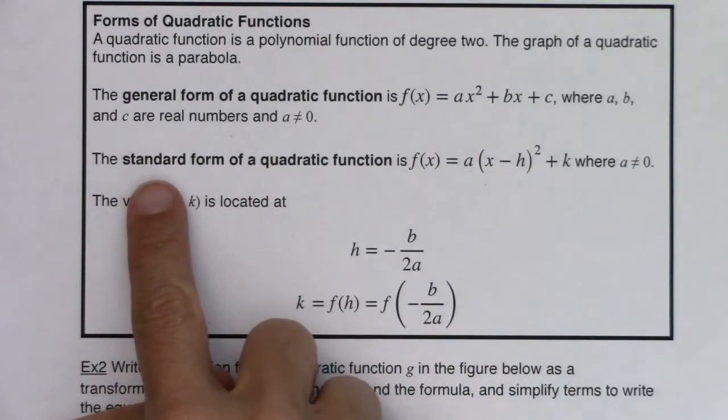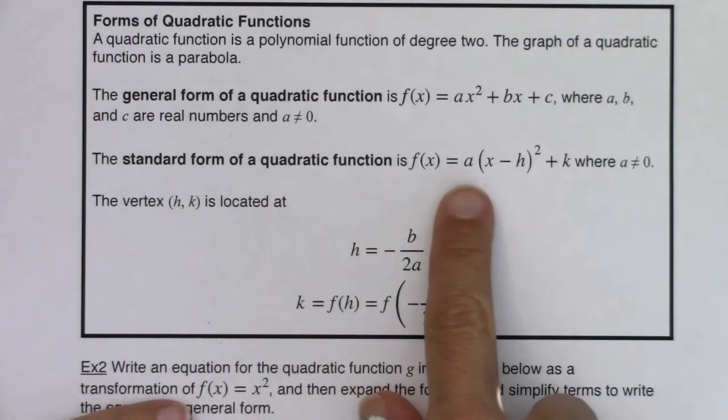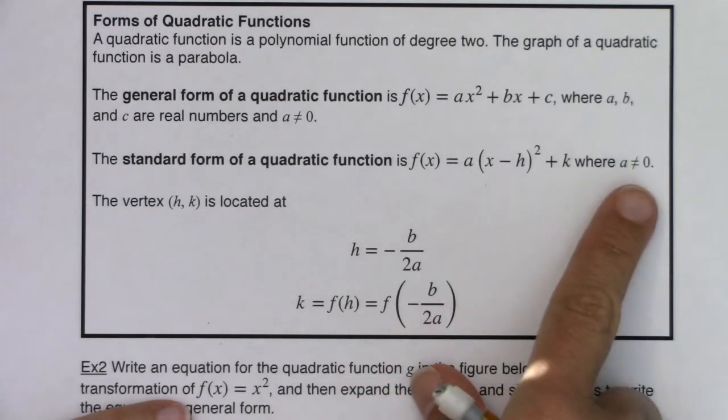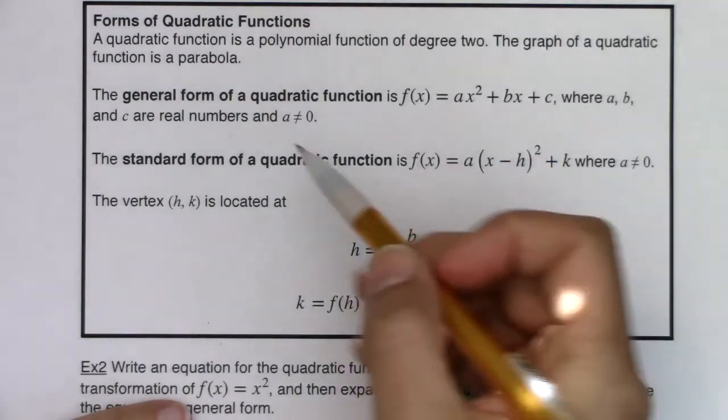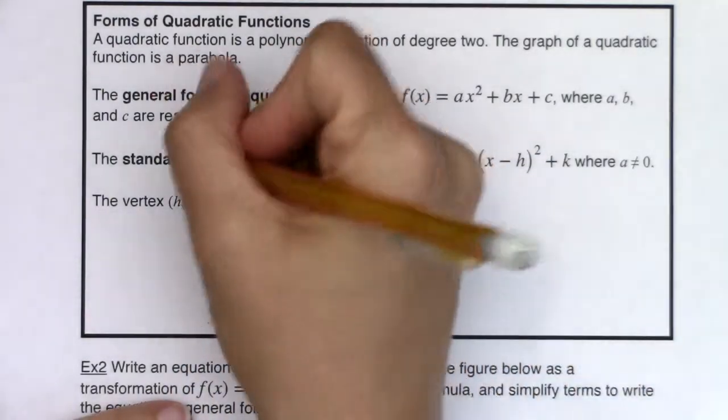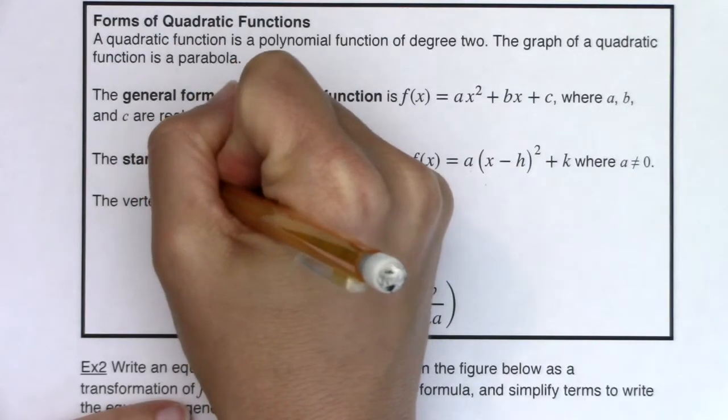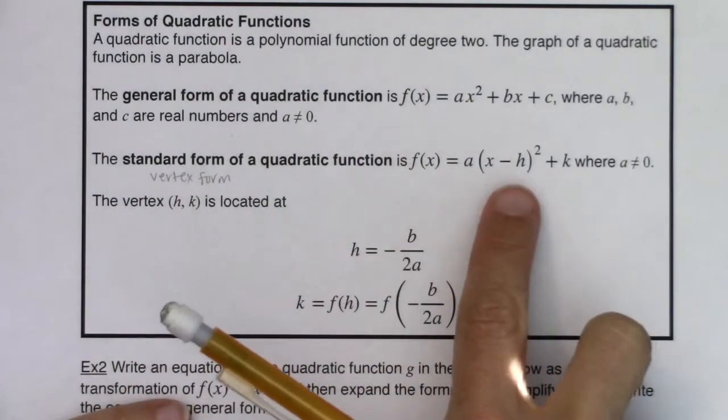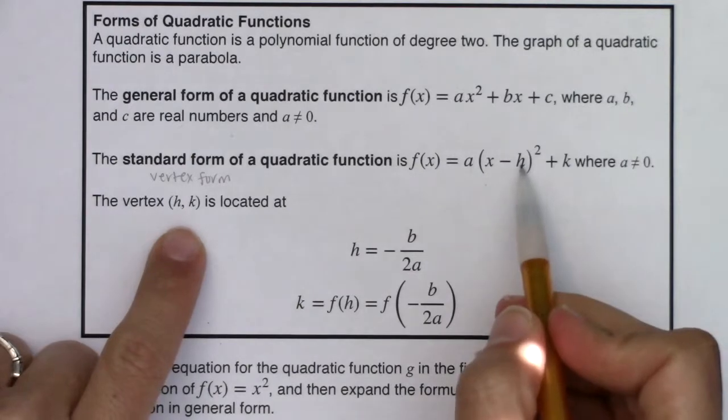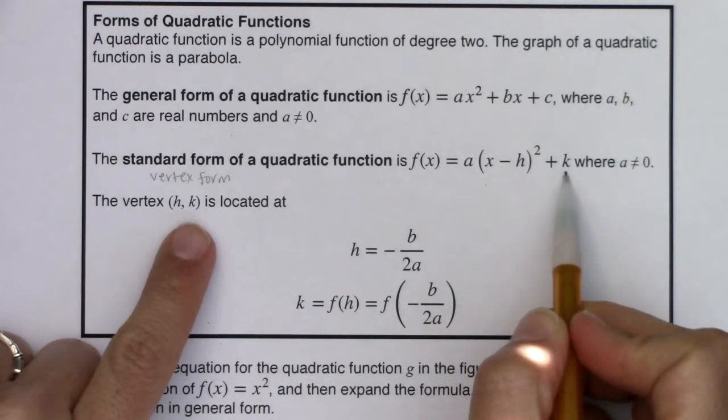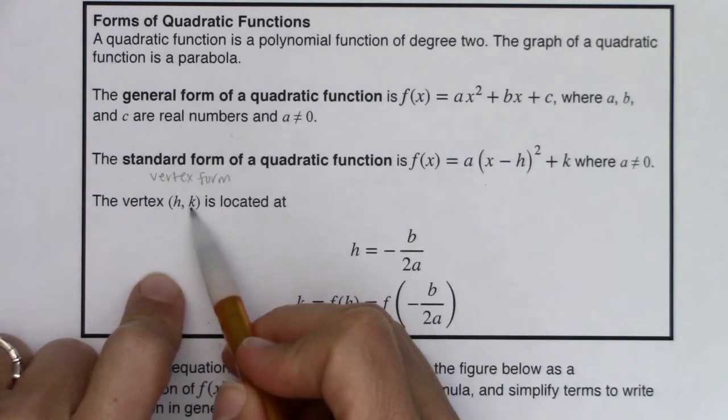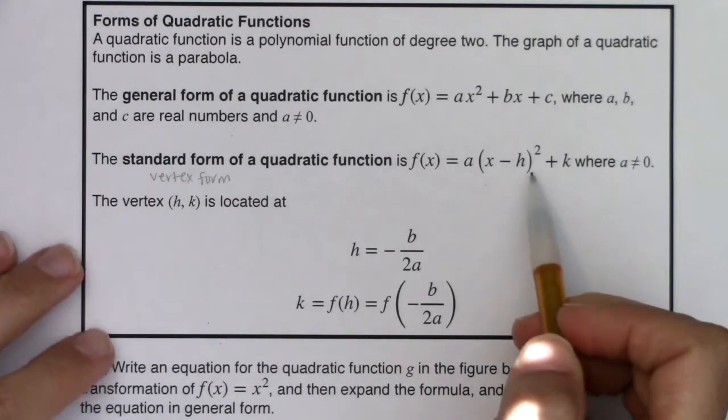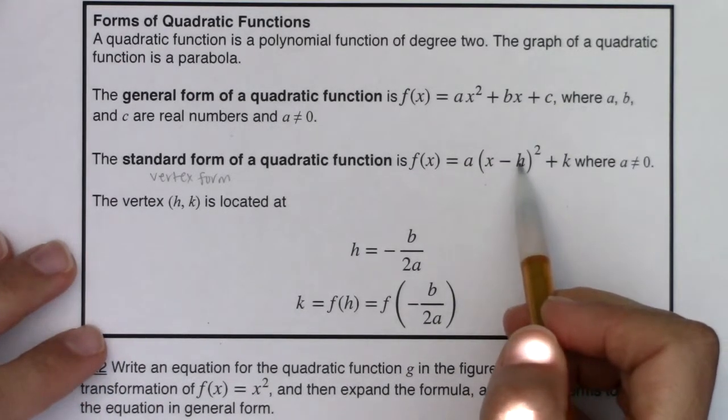When you hear me refer to the standard form of a quadratic function, we have a times the quantity (x - h)² + k and again a can't equal 0. Now sometimes instead of referring to this as the standard form, folks will call this the vertex form of a quadratic function and that's usually what I refer to it as. The reason being is that it's really nice for us to read the vertex. It's the ordered pair (h, k). This is either the high point or the low point. When I have a quadratic function in vertex form or in standard form, it's really easy for me to rattle off the vertex. I just see it as h, k.